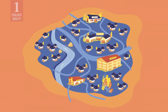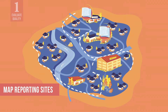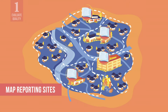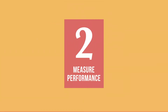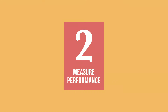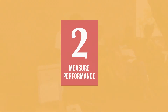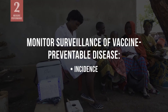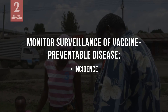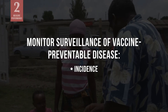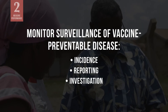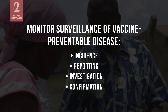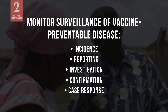Another way to measure surveillance quality is to map reporting sites to ensure that all areas are covered. Indicators can also be used to measure the performance of disease-specific surveillance. A surveillance system should monitor the incidence of key vaccine-preventable diseases, but it should also monitor how these diseases are reported, investigated, and confirmed, as well as the responses to confirmed cases.